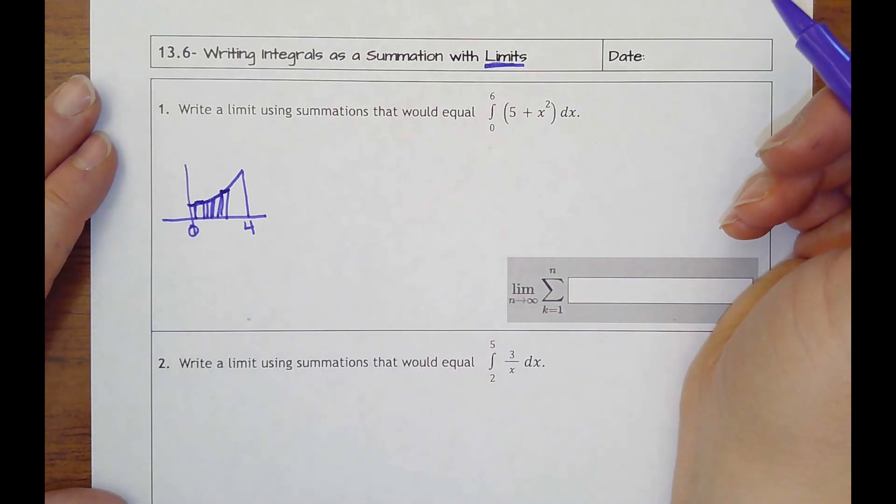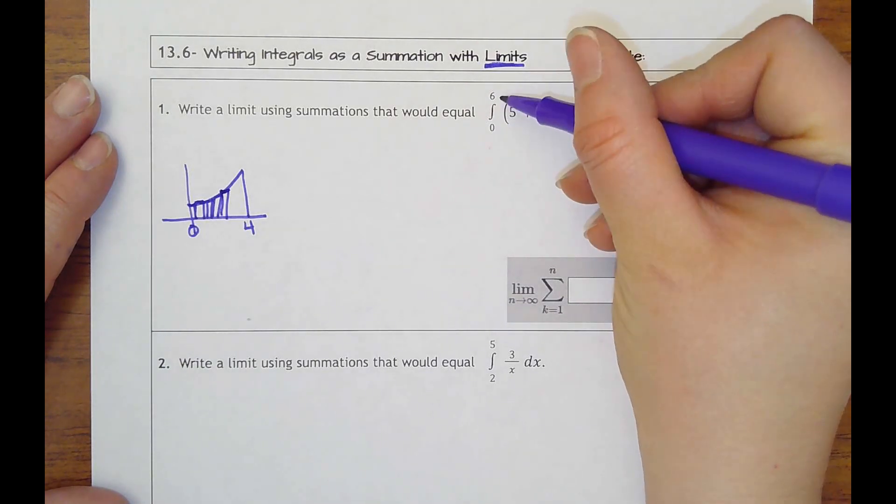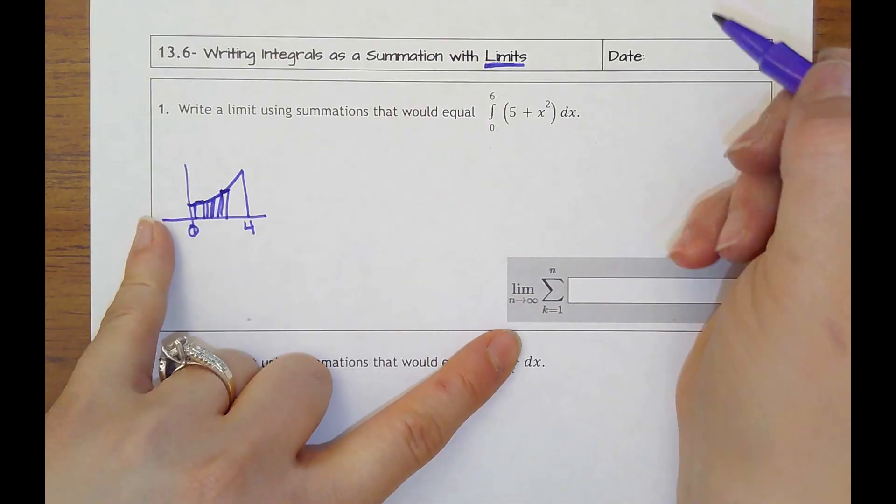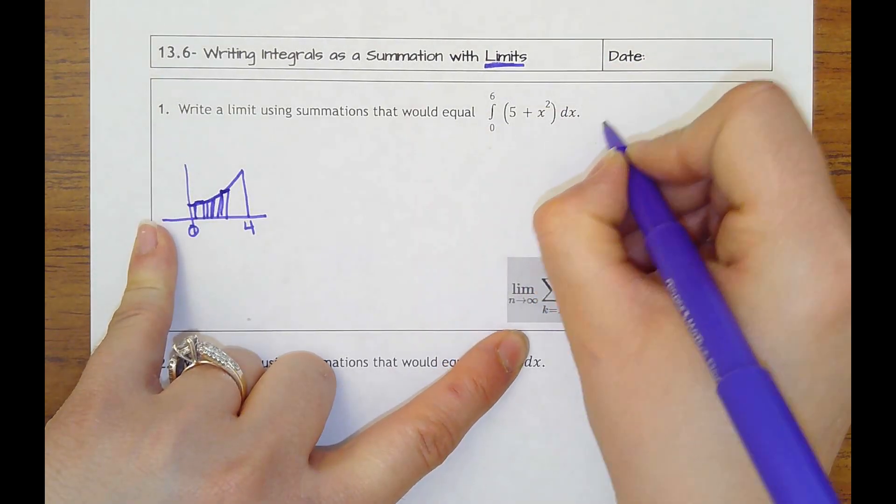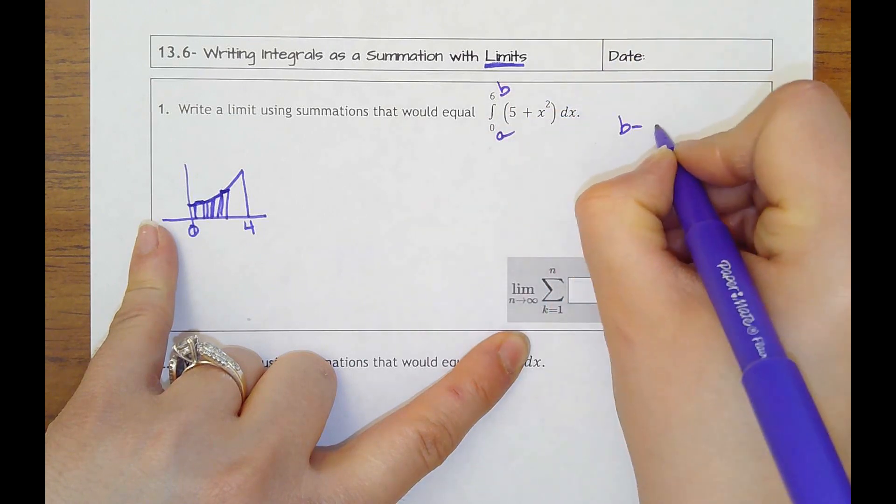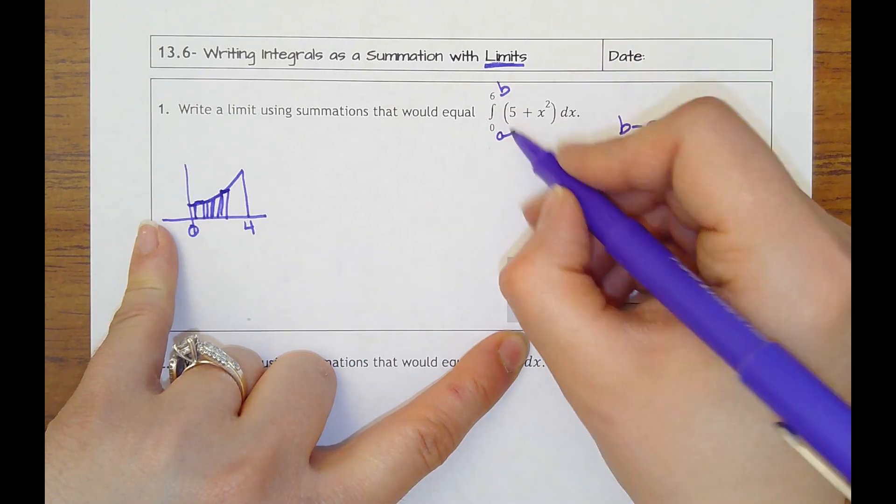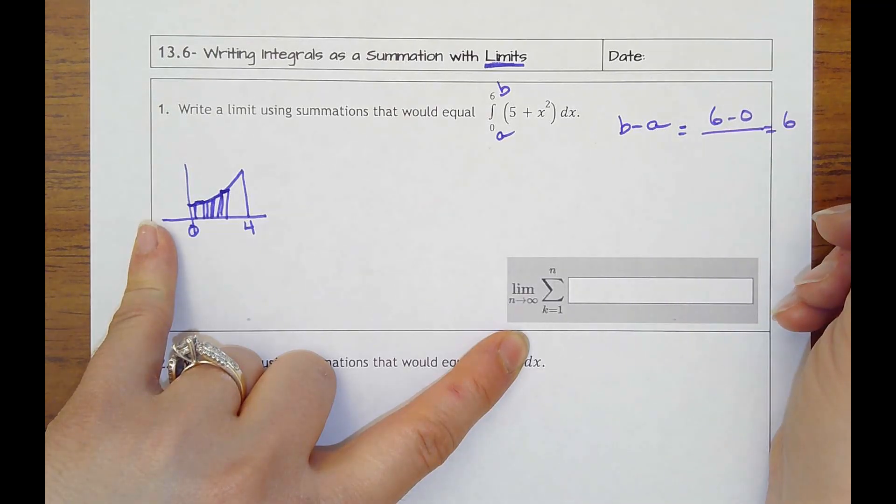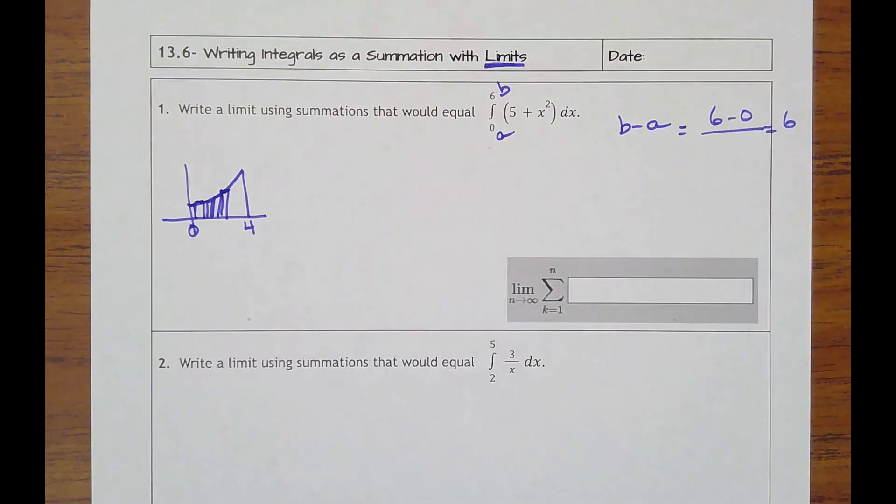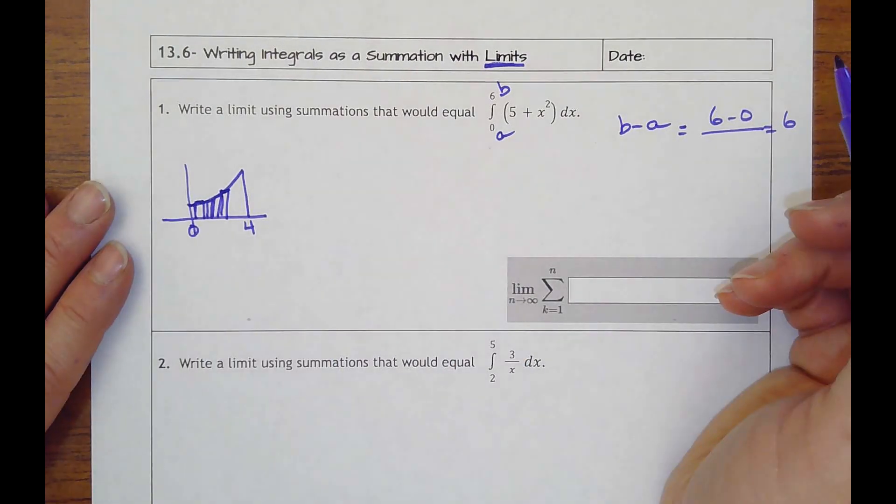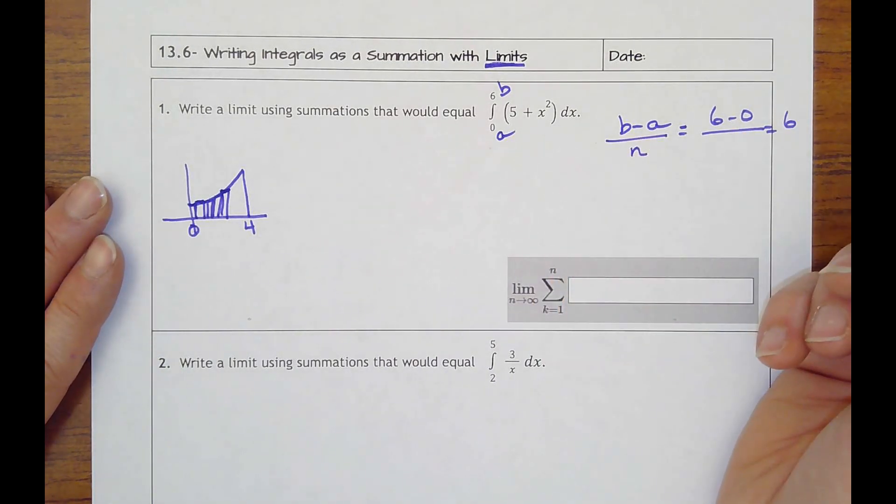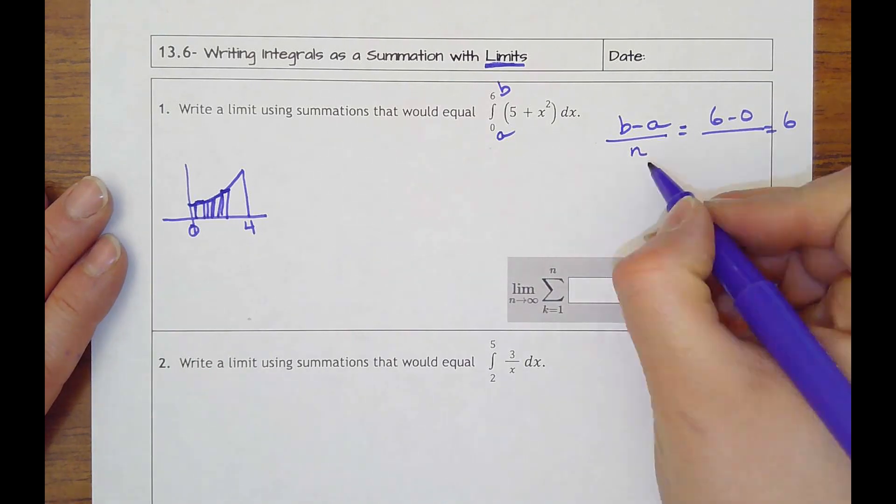So what I'm going to do is see that I'm going from zero to six, and it says then that I'm taking my b minus my a to find the difference—that's six minus zero, which is six—divided by the number of rectangles. Well, the difference is that I don't know the number of rectangles. We don't know how many rectangles we're going to have, and so we're just going to call that n. Before, it would say we're going to have 20 sub-intervals or 10 sub-intervals and we would divide by that number.